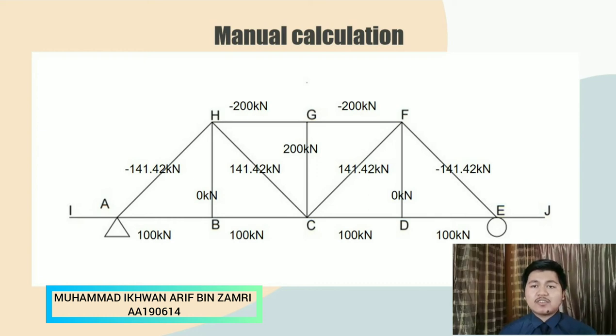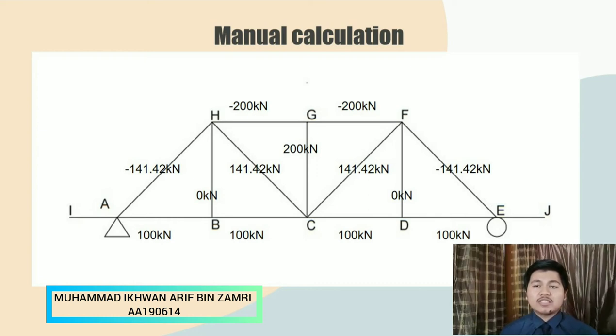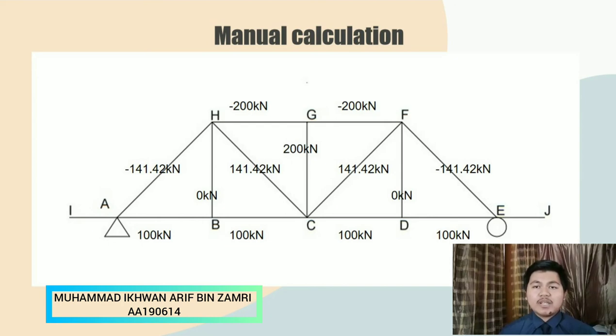The internal force at member CH and CF we get 141.42 kilonewton which is tension. At member FG and GH the internal force is negative 200 kilonewton which is compression. And the last one at member AI, BH, DF, and EJ the internal force is 0 kilonewton due to zero force member.